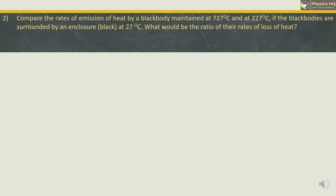Compare the rate of emission of heat by a black body maintained at 727°C and 227°C. Let us convert these temperatures into Kelvin. T1 is 727°C; adding 273 gives 1000 Kelvin. The second temperature is 227°C; after adding 273 we get 500 Kelvin.